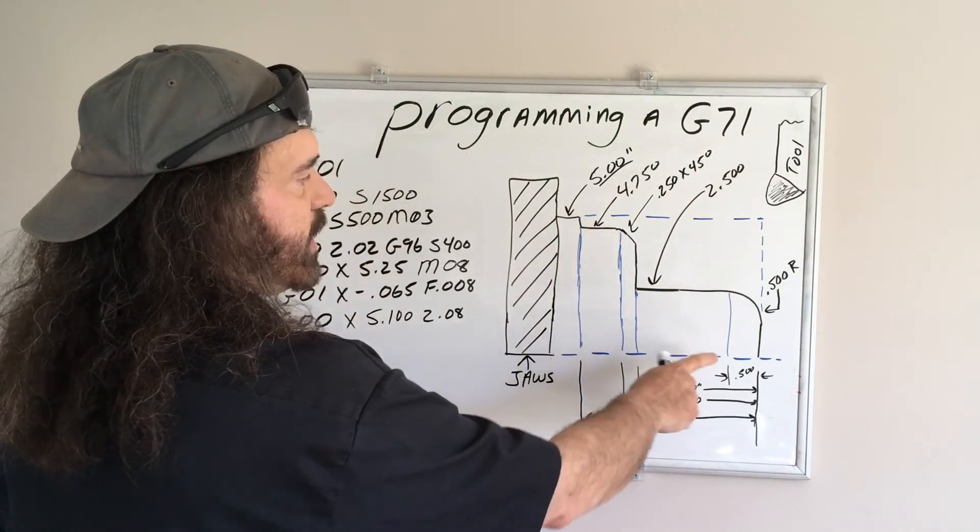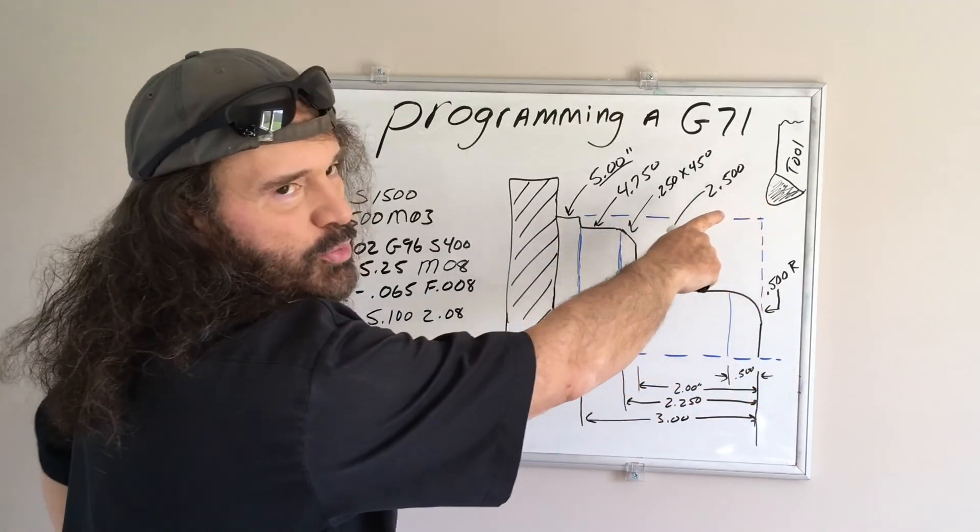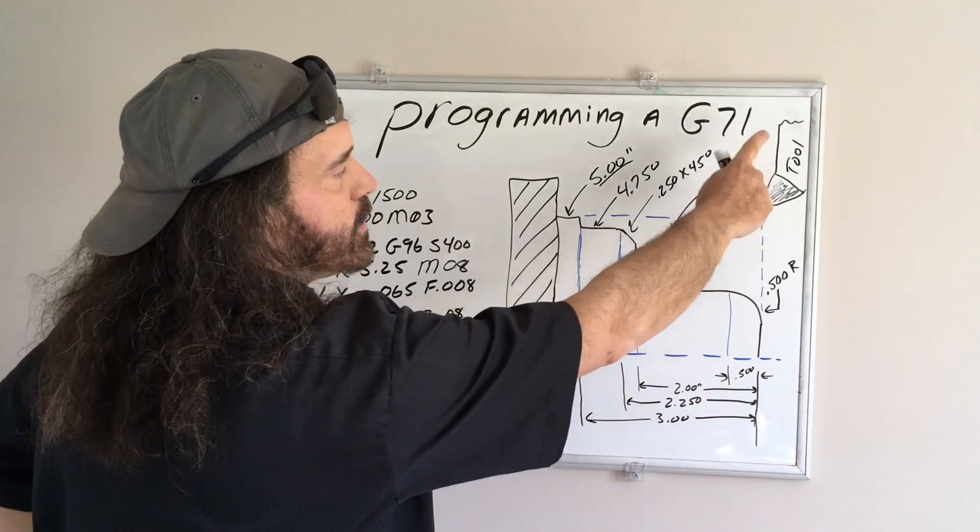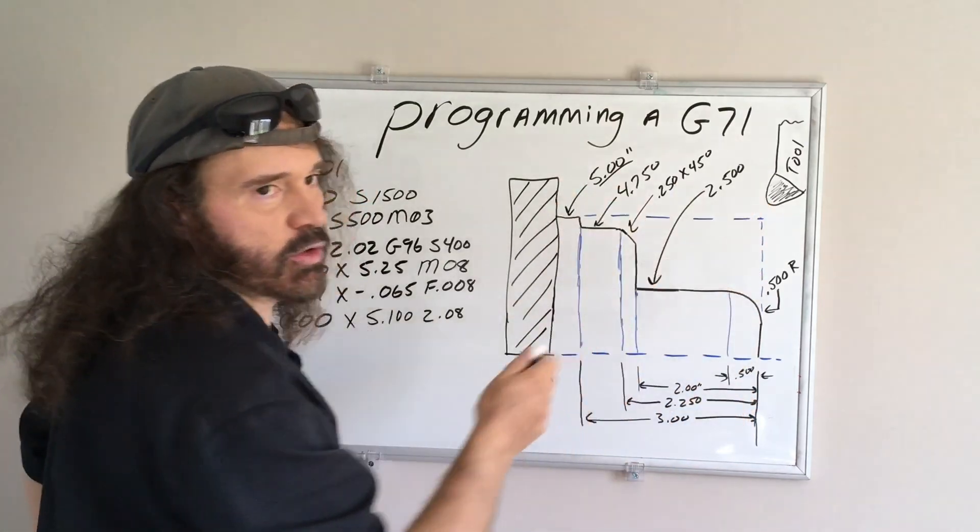So let's say we're going to face the part, this is my preset drawing of a tool, so we're going to face the part, and then you're going to begin your canned cycle.